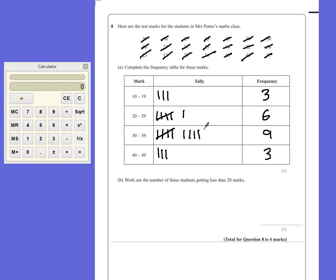Part B: Work out the number of students getting less than 20 marks. Well, less than 20 marks means that we have to be in the 10 to 19 range, which means that there are only three people, the frequency being three, that scored those numbers.